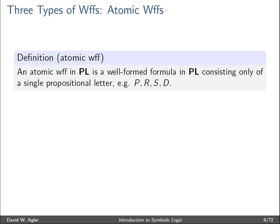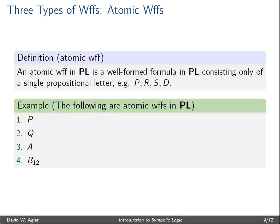Now I want to talk about three different types of well-formed formulas. The first is an atomic WOOF — any well-formed formula consisting only of a single propositional letter. Examples of atomic WOOFs include P, Q, and A, which are all single propositional letters. B sub 12 is also a propositional letter and meets the standard of being an atomic WOOF.